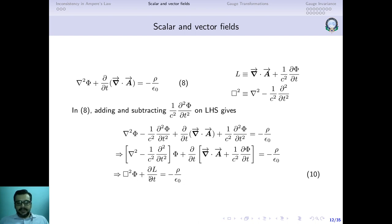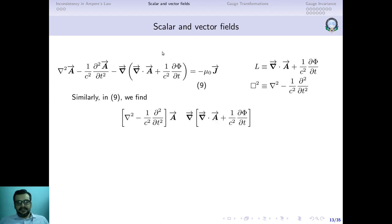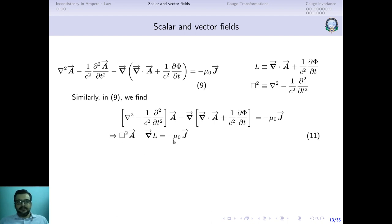We give the same treatment to equation 9. The A terms combine with the d'Alembertian to give □²A, and the remaining first-order derivative terms involve the gradient of L. This gives: □²A − ∇L = −μ₀J. This is equation number 11. So the dynamic behavior of the potentials φ and A is governed by equations 10 and 11.